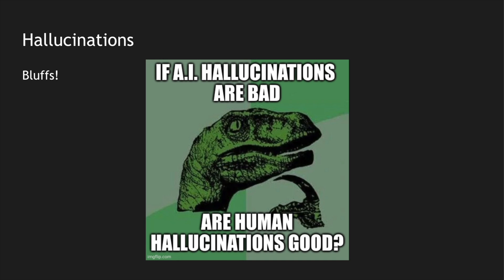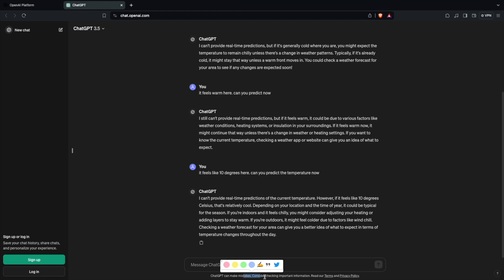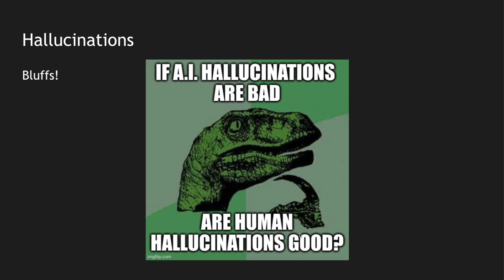Hallucinations are basically bluffs where LLMs create false information when they don't know something. Just like in a college viva, if a professor asks something you don't know, you might bluff — humans have a tendency to create something artificially. LLMs can do the same — artificially create something which doesn't exist and which may be false. That's why you see the disclaimer everywhere saying ChatGPT can sometimes make mistakes. We are not fully able to rely on AI yet, but there are different techniques to reduce the number of hallucinations an LLM produces.